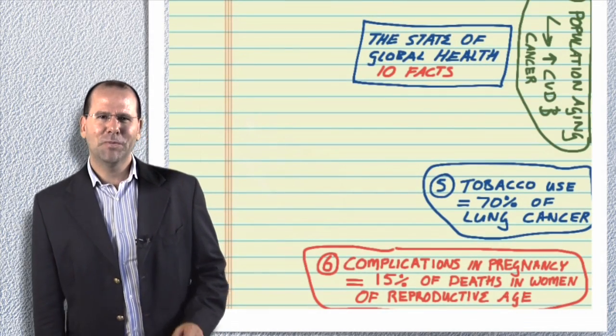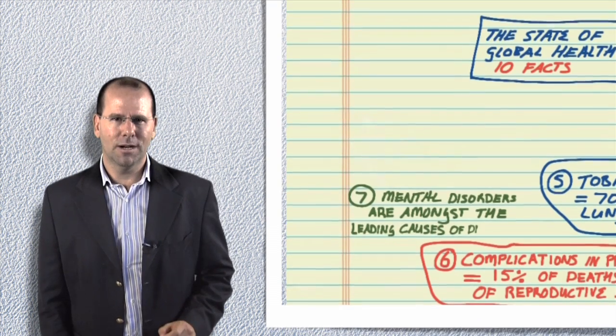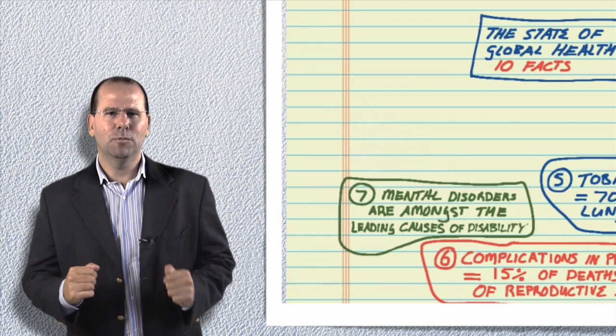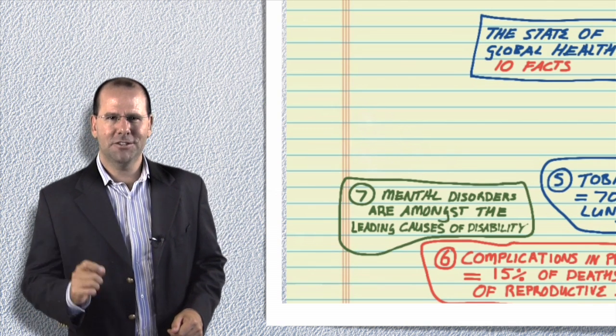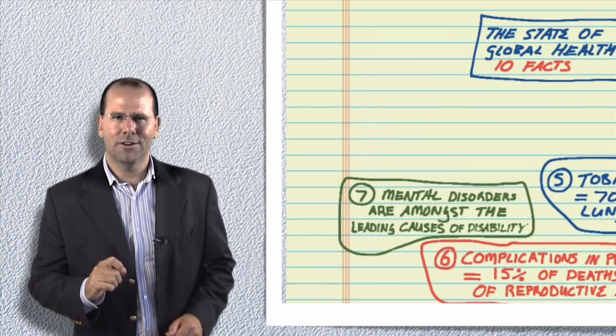Fact number seven: mental disorders such as depression are amongst the 20 leading causes of disability worldwide. Depression affects around 350 million people worldwide and this number is projected to increase. Fewer than half of those affected have access to adequate healthcare and treatment.